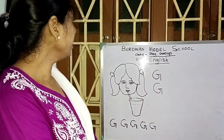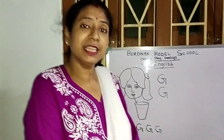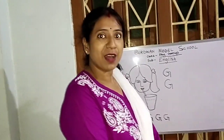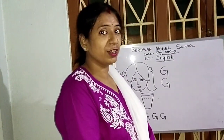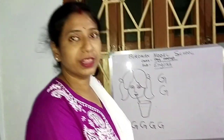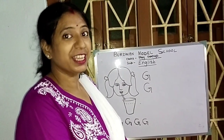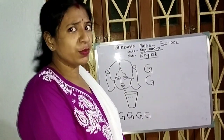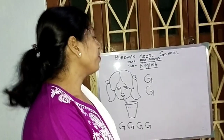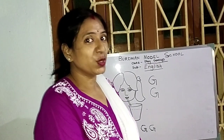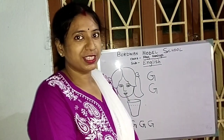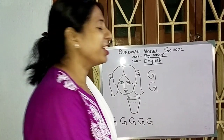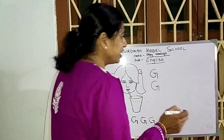So, student, you practice G. And now time to do some wonder — do some magic with alphabet G. I told you everything starting with G, but one thing I didn't say. You know, G for what? Let's see.